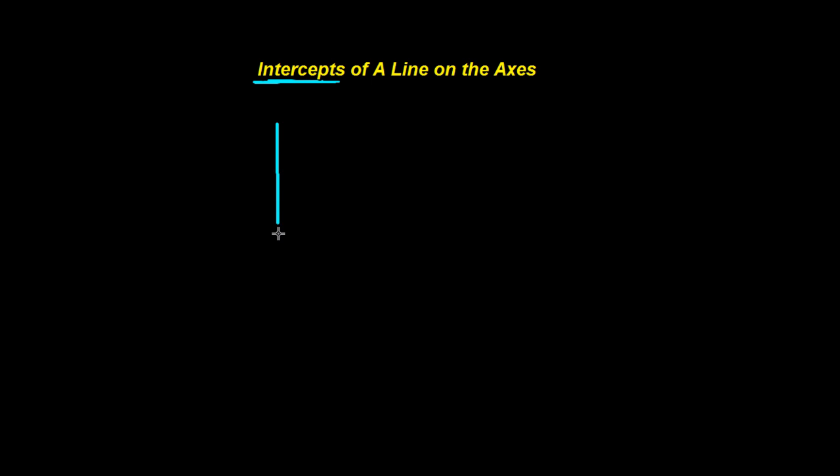In this video I just want to inform you what is the intercept of a line on the axis. Later you'll encounter intercept many times — x-intercept, y-intercept — so what should we understand from the intercept of a line on an axis?